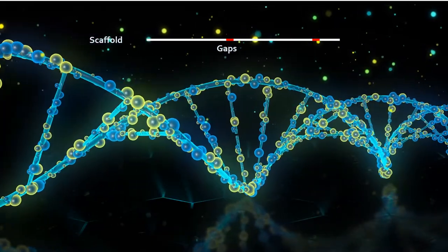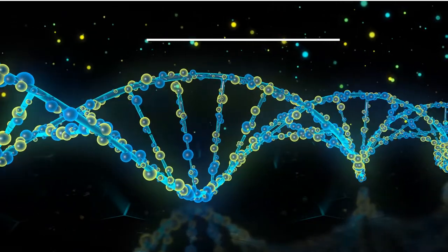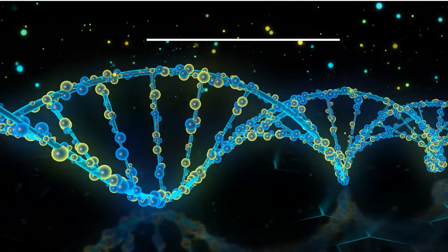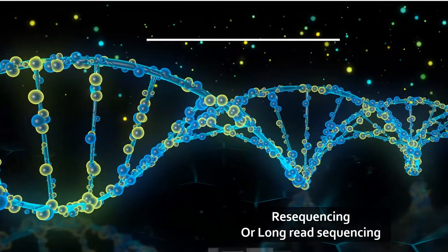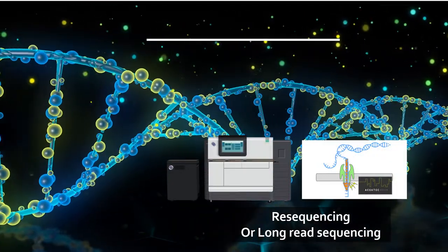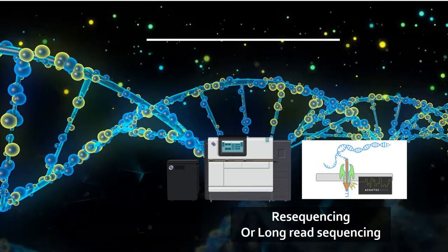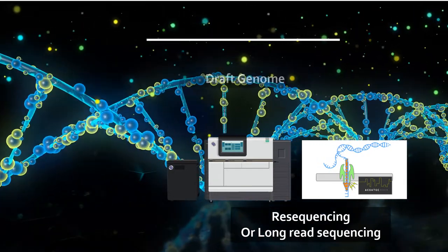To fill in the gaps and properly align the genome to obtain complete and highly accurate information, resequencing or using sequencing platforms like Pacific Biosciences or Nanopore that sequence longer reads are useful. This way you get a complete genome or finished genome.